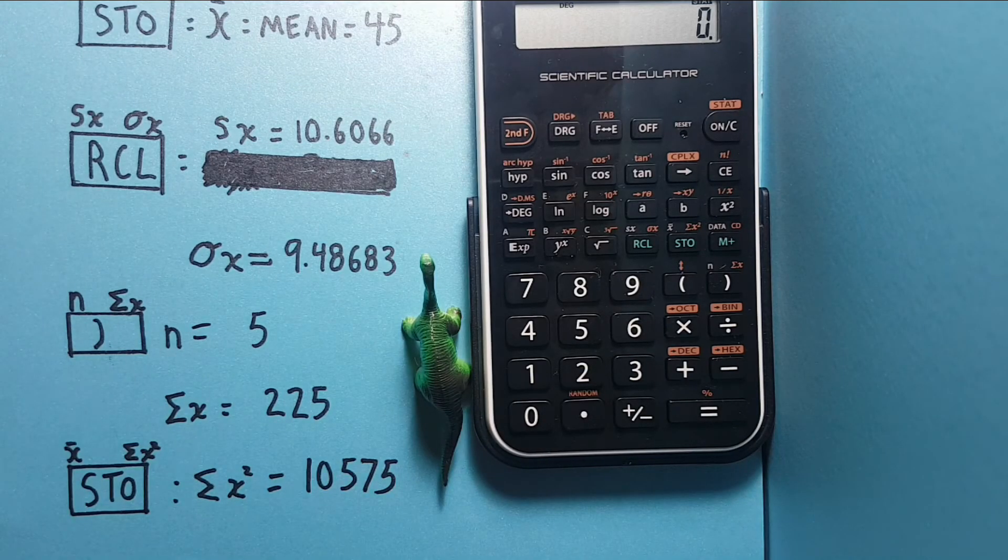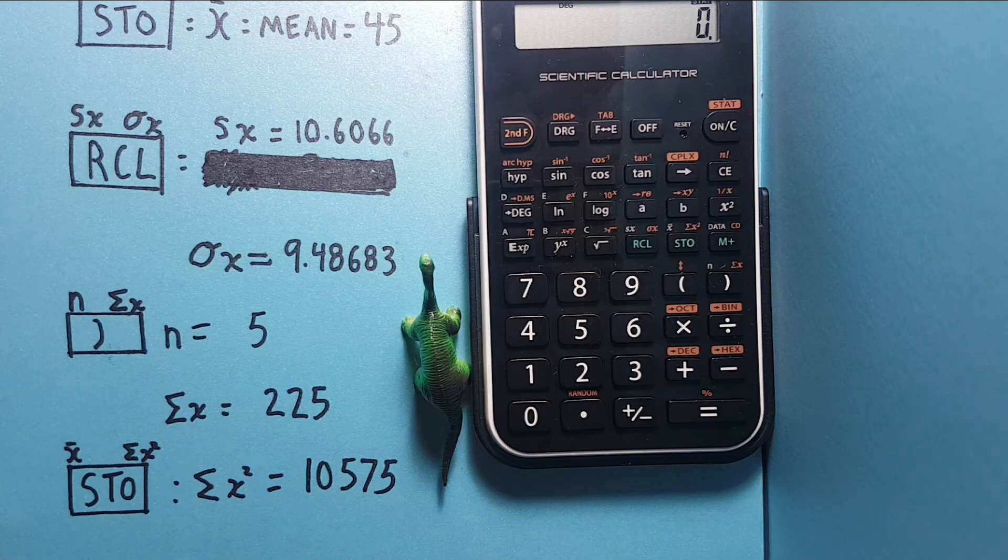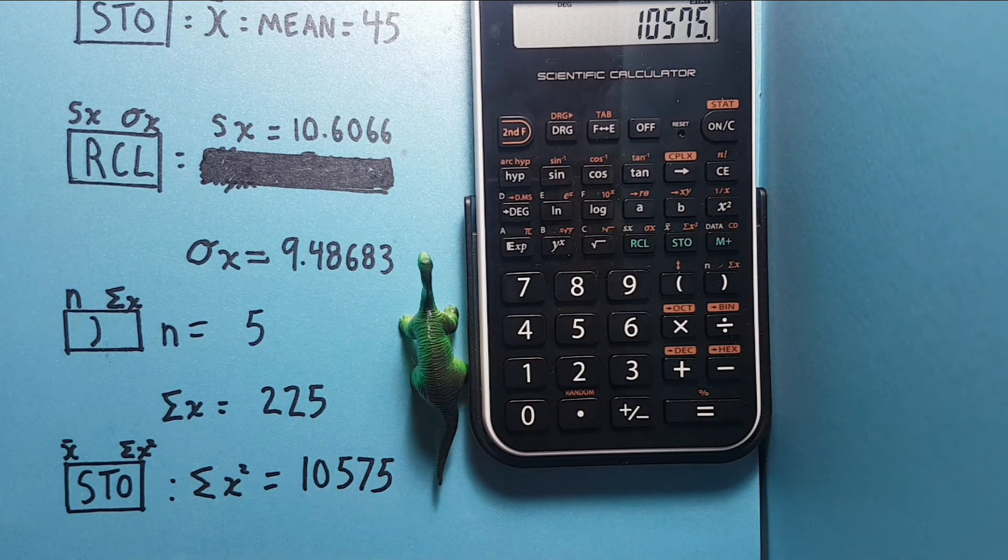And if we wanted to see the sum of squares of our numbers, we would use the STO key, second function, so second function STO, and there is the sum of squares of our numbers.